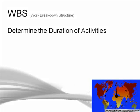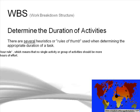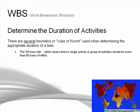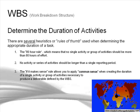Determine the duration of activities. There are several heuristics or rules of thumb which can be used to determine the appropriate duration of a task: the 8/80 rule, meaning no single activity or group of activities should be more than 80 hours of effort; no activity or series of activities should be longer than a single reporting period; or the 'if it makes sense' rule, which allows you to apply common sense when creating the duration of activities necessary to produce a deliverable defined by the WBS.